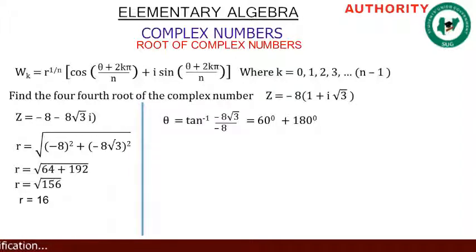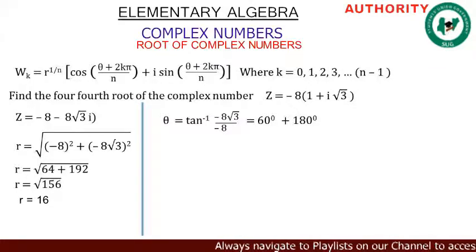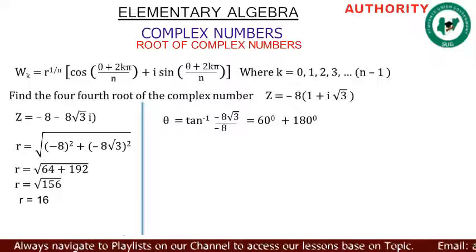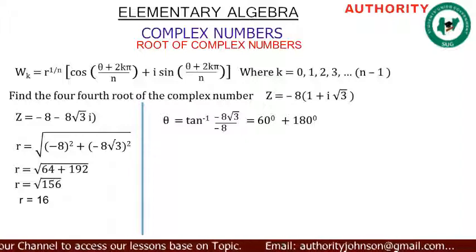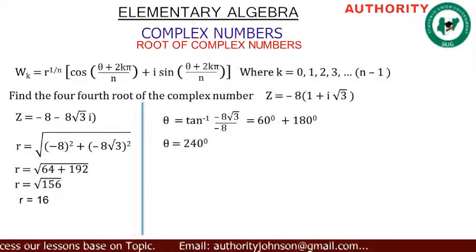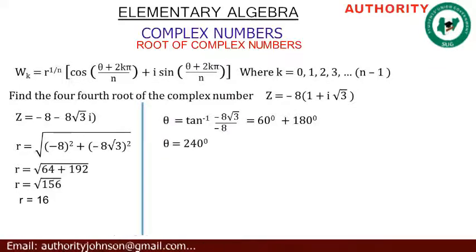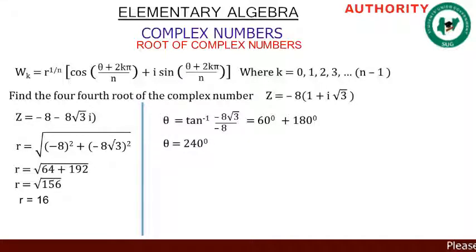Our θ = tan⁻¹(-8√3 / -8), which gives 60 degrees. But 60 degrees does not correspond to the correct quadrant when we represent this on an Argand diagram. So we add 180 degrees: 60 + 180 = 240 degrees. Therefore θ = 240 degrees.